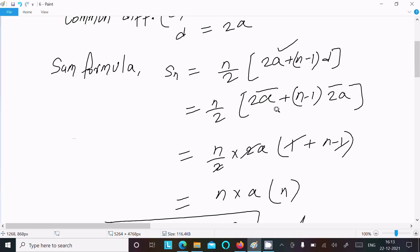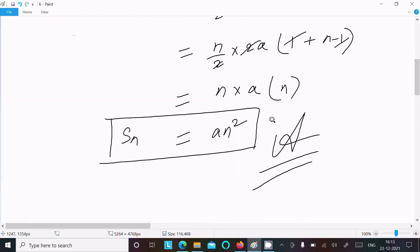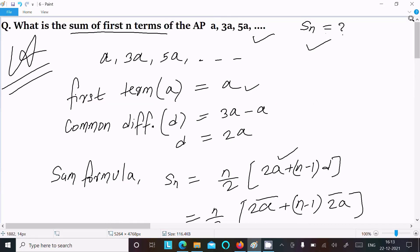After doing the calculation, you get an². This is the way we can find the sum of first n terms of this given AP. So now this video is over. Thanks for watching, see you in the next video, thank you.